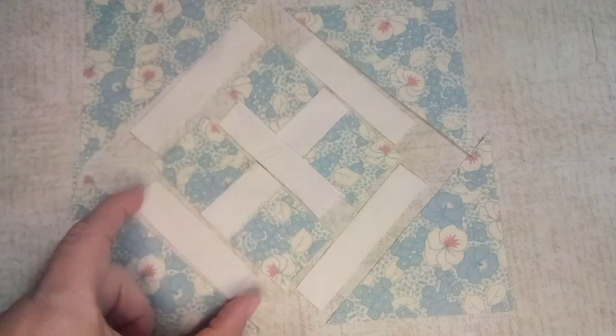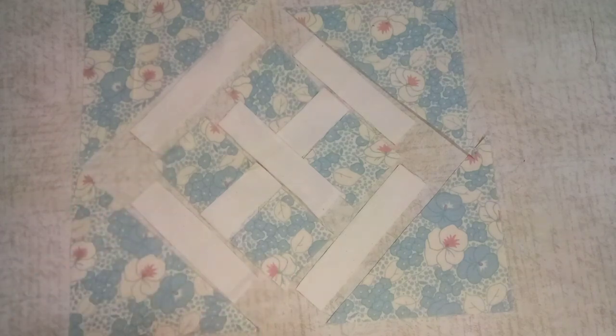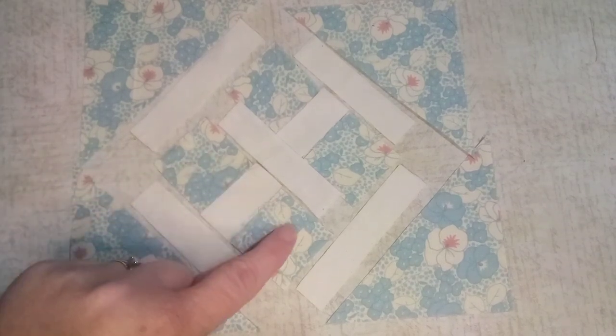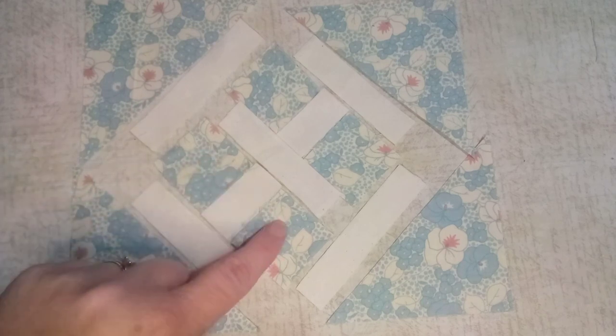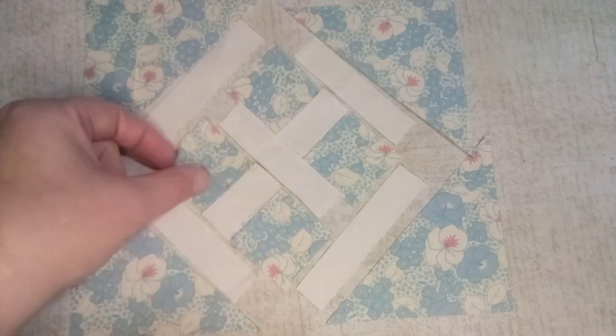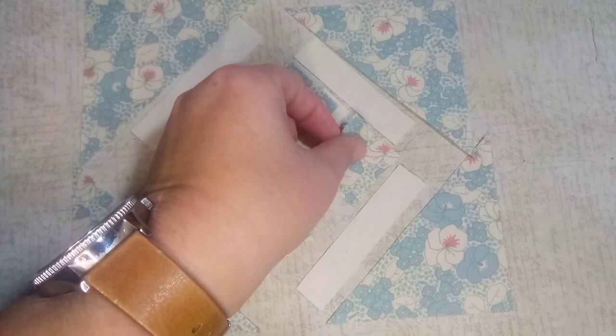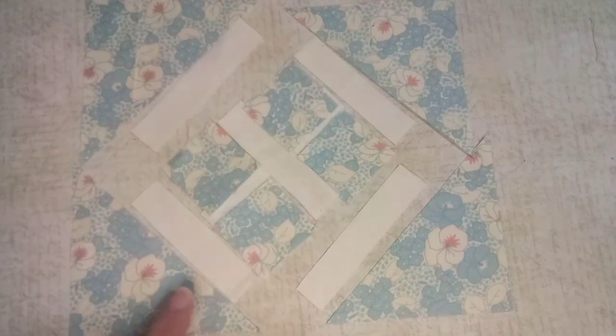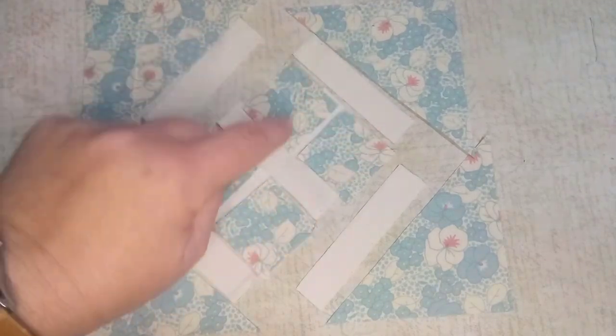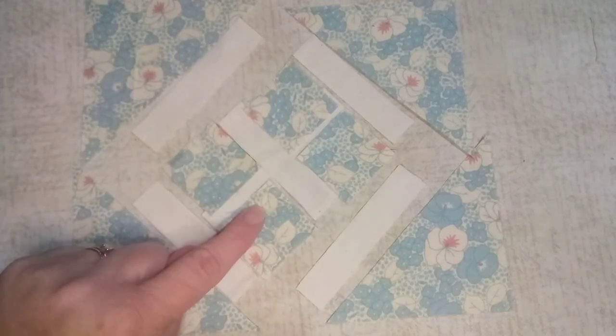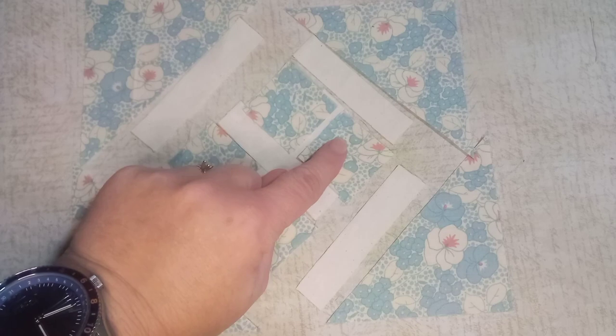Once we start sewing these, those seams will shrink up the whole pieces so they'll line up. Let me walk through the order of how we're going to sew things. First, it's going to be these three pieces: the squares with the center strip. Once we get those sewn, we can sew them in units with these strips.